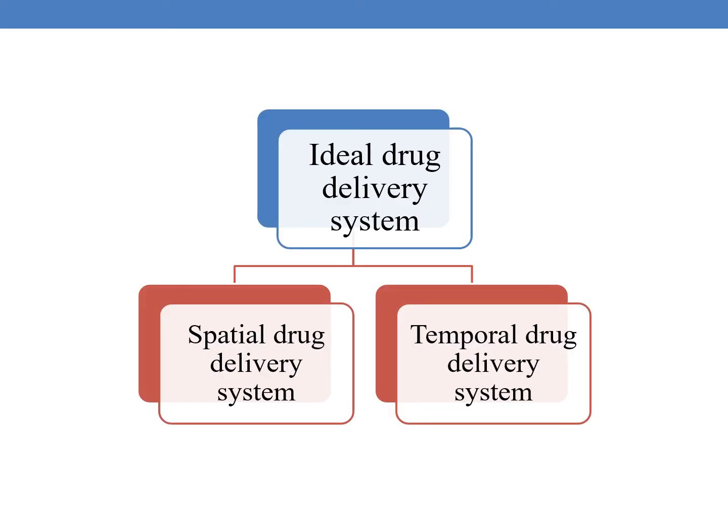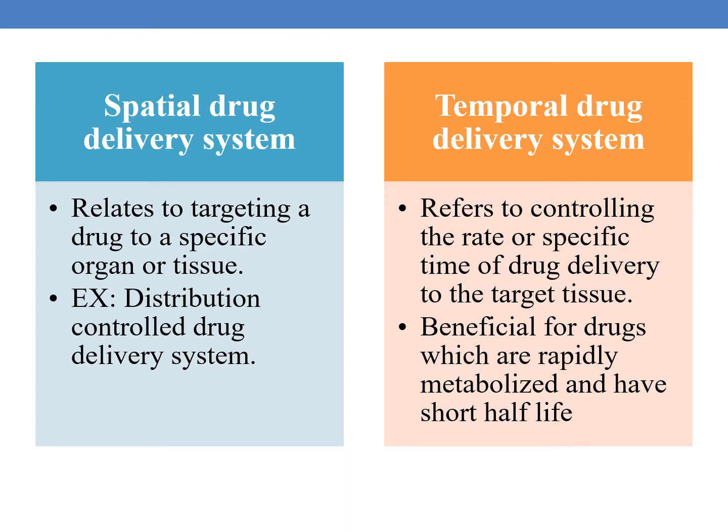Ideally, there are two types of ideal drug delivery systems, especially in case of controlled drug delivery systems. They are spatial drug delivery system and temporal drug delivery system. The spatial drug delivery system relates to targeting — it relates to targeting a drug to a specified organ or tissue. An example is a distribution controlled drug delivery system.